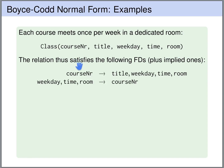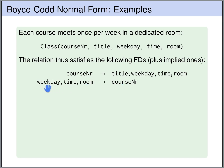So we have two functional dependencies. The course number determines everything, and weekday, time, and room also determine the course number and thereby the title, and so on. These two functional dependencies imply all other functional dependencies valid for this table. What are the minimal keys? The course number uniquely determines everything, so it is a key on its own. And weekday, time, and room together determine the course number, so they form a minimal key as well — we cannot drop any of them without losing unique determination of course number.